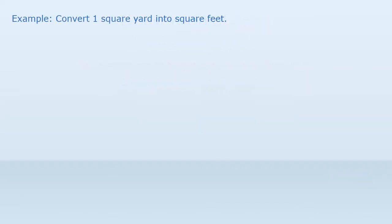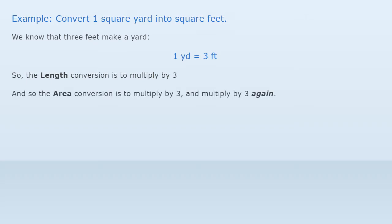Convert one square yard into square feet. Three feet make a yard, so the length conversion is to multiply by three. So the area conversion is to multiply by three, and multiply by three again. Result is three times three equals nine. There are nine square feet in a square yard.